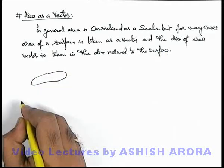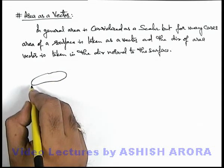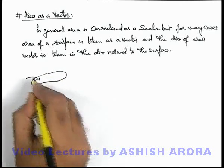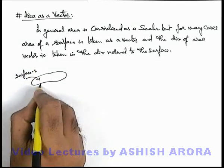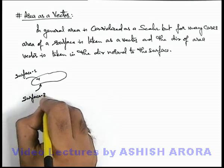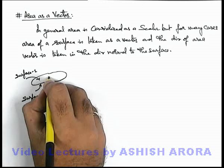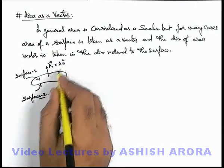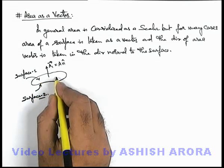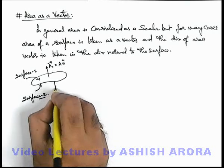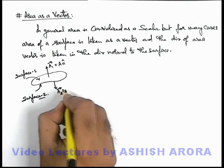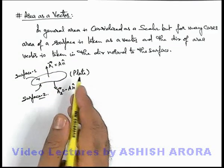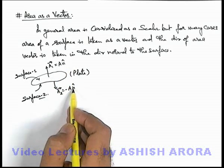For example, if we are given a specific area — for any given surface it has a specified area — say this is an object which has two surfaces: surface 1 on the front side and surface 2 on the back side. The area vector on the front side is A1 vector, written as A n-cap, where n-cap is the unit vector normal to the surface. At the rear side, the area vector A2 vector is written as minus A n-cap. So for a plate with the same area on both sides, the area vectors are A n-cap and minus A n-cap for the two directions.